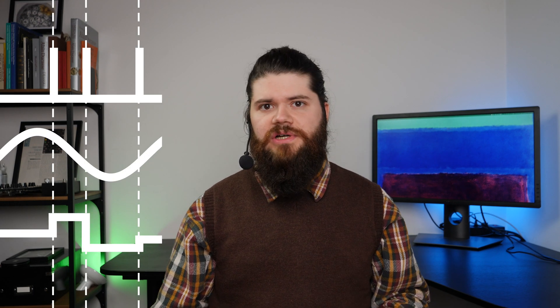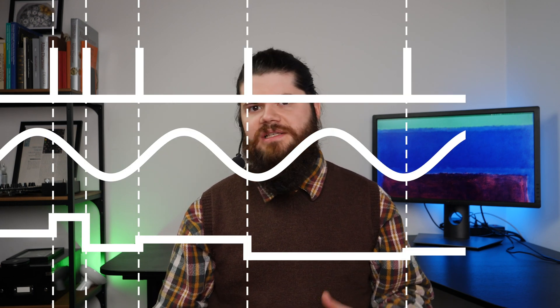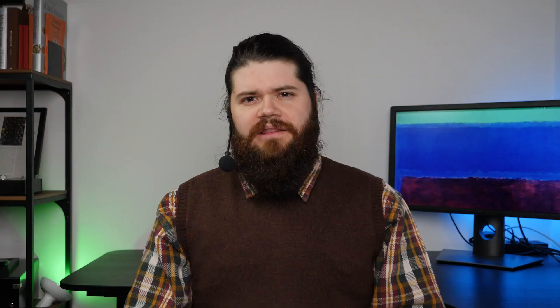Remember our video about timing pulses? We said that a gate can stay high as much as we want, while a trig signal is only a few milliseconds long. So if we feed a track and hold circuit with trigs instead of gates, we obtain a sample and hold.